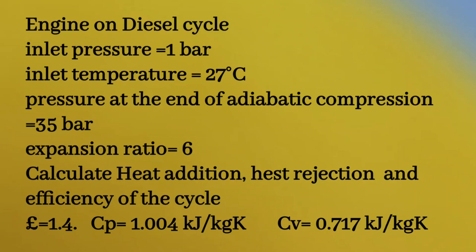Engine working on diesel cycle. Inlet pressure 1 bar. Inlet temperature 27 degree Celsius. Pressure at the end of adiabatic compression 35 bar. The ratio of expansion is equal to 6. Calculate the heat addition, heat rejection and the efficiency of the cycle. Assume Gamma is equal to 1.4, Cp is equal to 1.004 kJ per kg Kelvin and Cv is equal to 0.717 kJ per kg Kelvin.